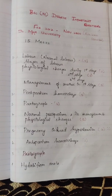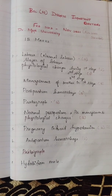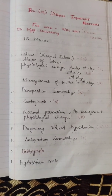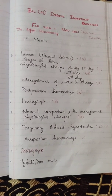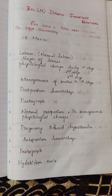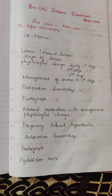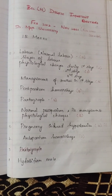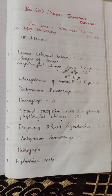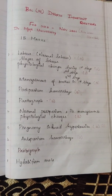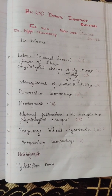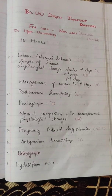Next is postpartum hemorrhage — this question has appeared 5 times. Then partograph — this is 5 marks and 15 marks. Normal puerperium period and its management, and physiological changes during the puerperium period. If you have a question on this topic, read all the subtopics at one time. Normal puerperium period has appeared 3 times.